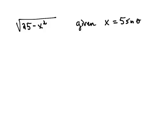In this example, we're asked to simplify the square root of 25 minus x squared, knowing that x is 5 sine theta.